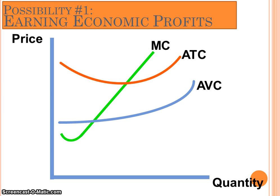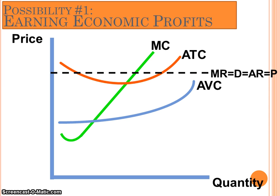Condition number one is earning economic profits — excessive profits above and beyond what's required to stay in business. Economic profits means you're already covering all your implicit costs, and this money is pure gravy above and beyond what you could ever expect to earn — a fantastic situation. You're earning economic profits if total revenue minus total cost leaves money left over. To draw an example on your graph, draw in Mr. DARP at approximately $120. The market sets the price, so in this example the market sets the price at $120.